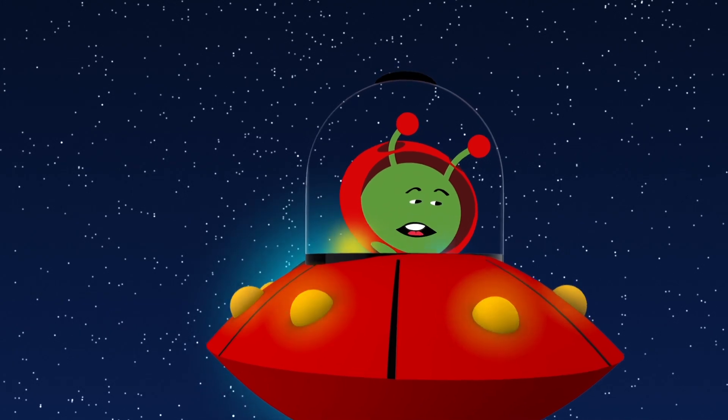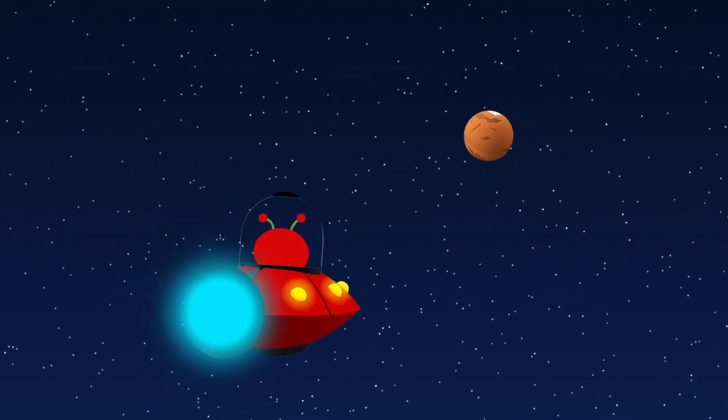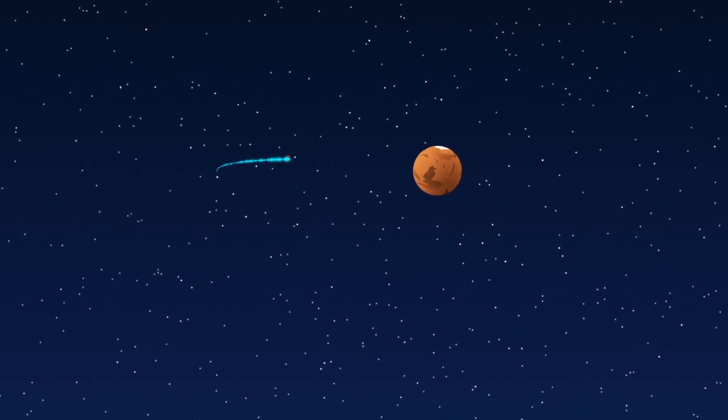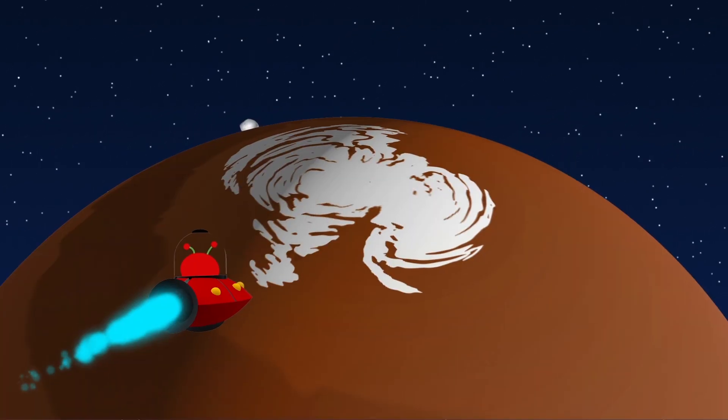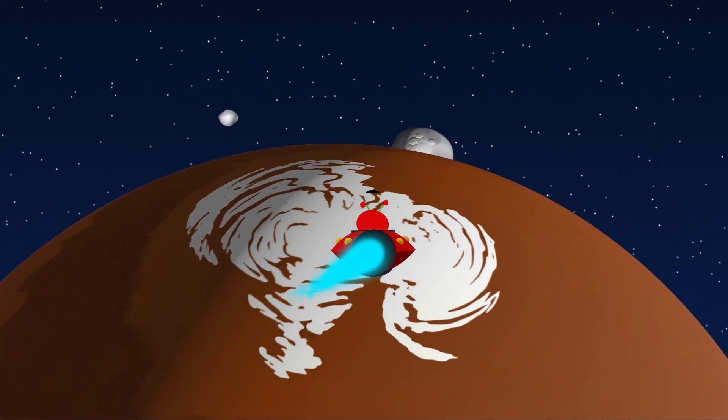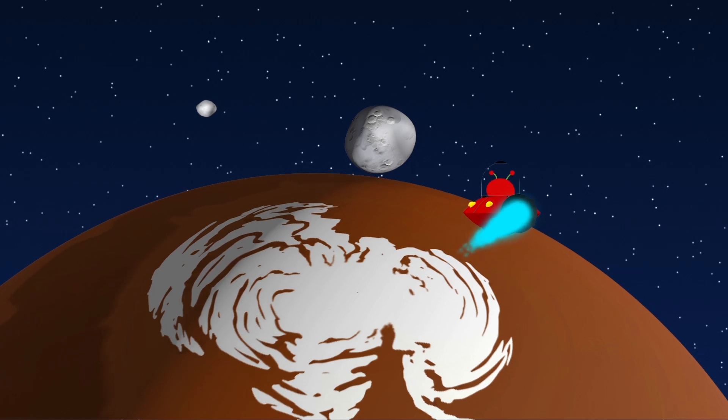Look, there's a planet up ahead. Maybe there are some people there that I can ask for directions. I hope they're friendly. There's ice at the poles, and I can even see two small moons. Where could I be?